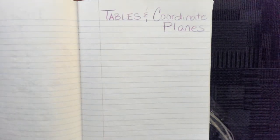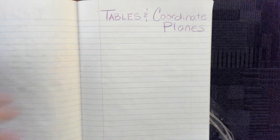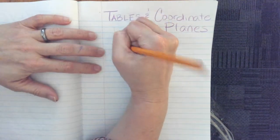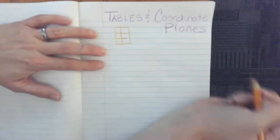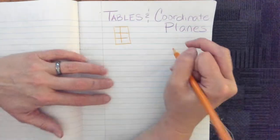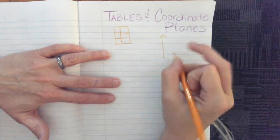Alright, so this is an anchor chart video for tables and coordinate planes. Just to remind you of what we're talking about, a table in general looks something like this,